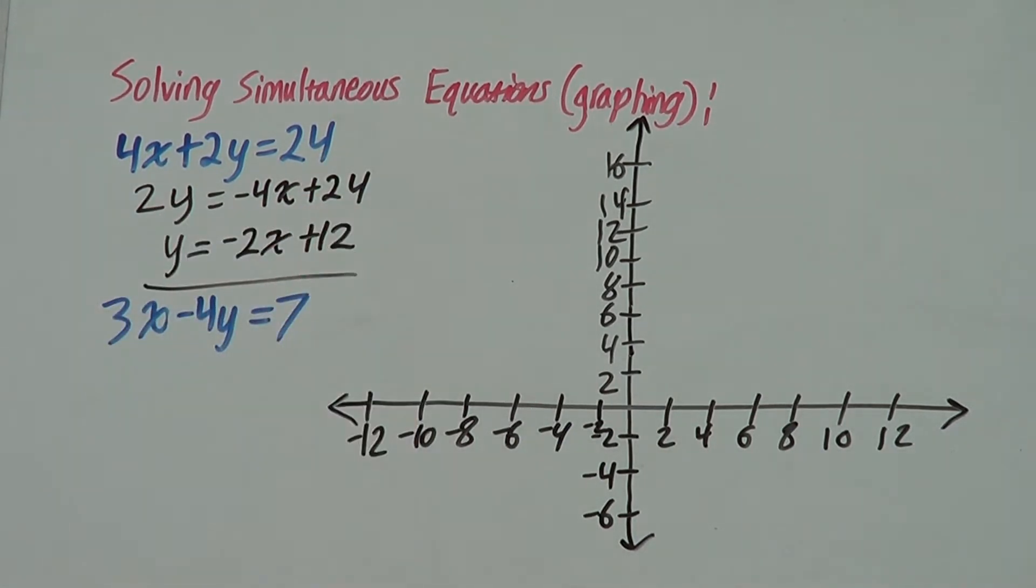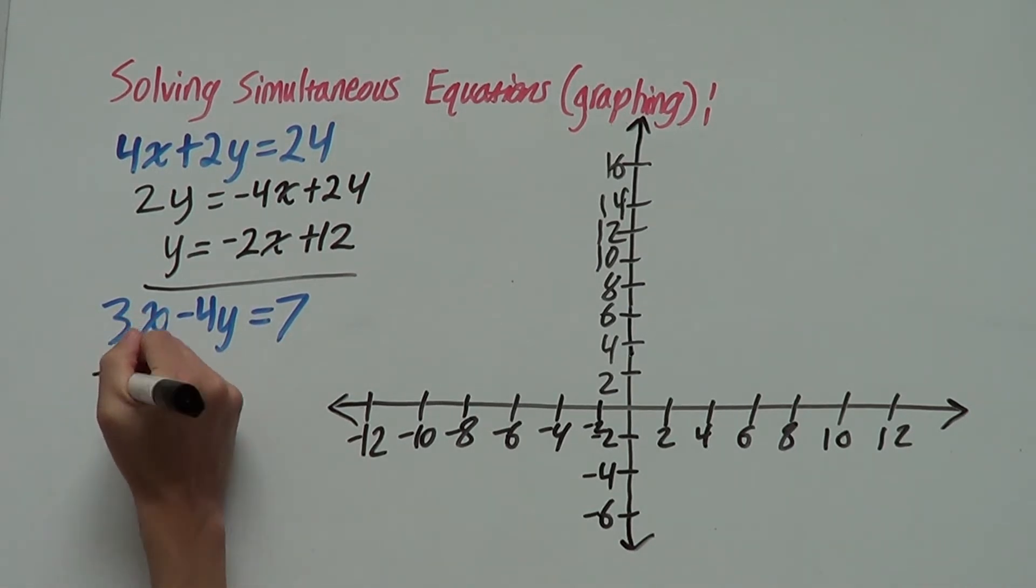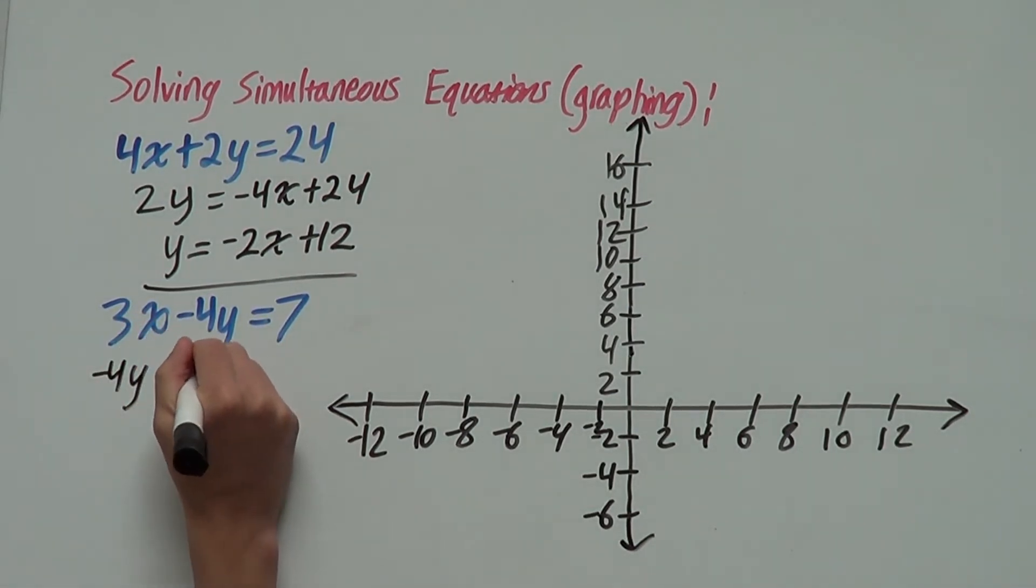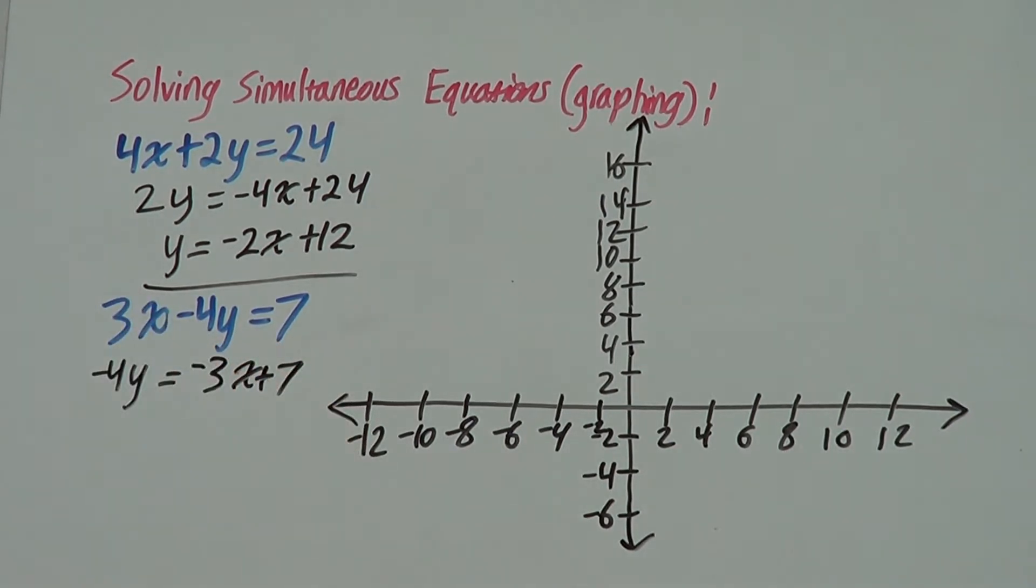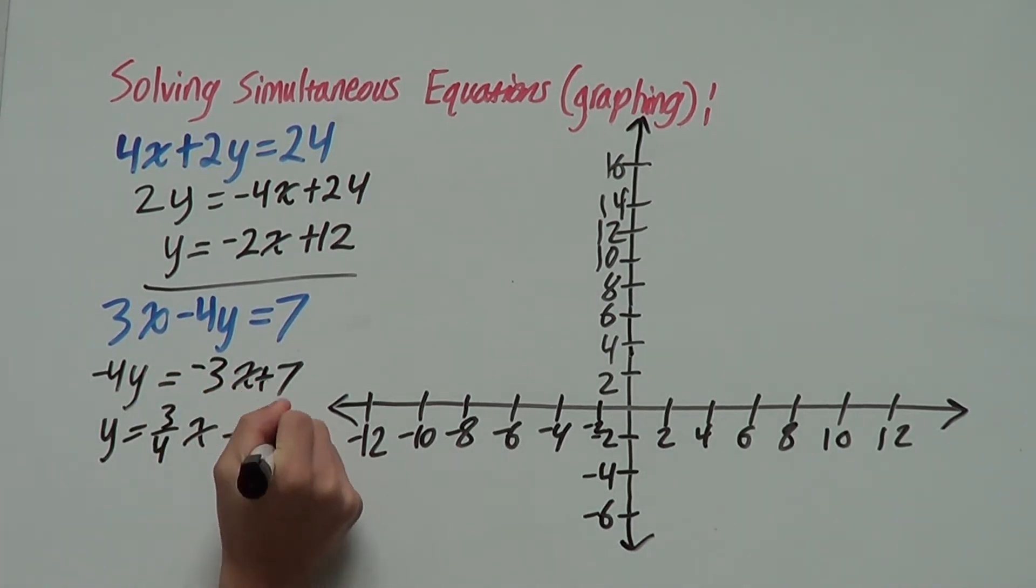So, that's our equation to graph for our first line. And for our second, we have negative 4y equals negative 3x plus 7 when we subtract both sides by negative 3x, and then divide everything by negative 4 to give us y equals 3 over 4x minus 7 over 4.